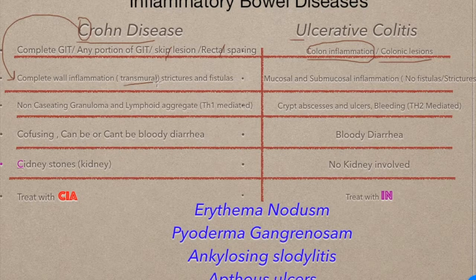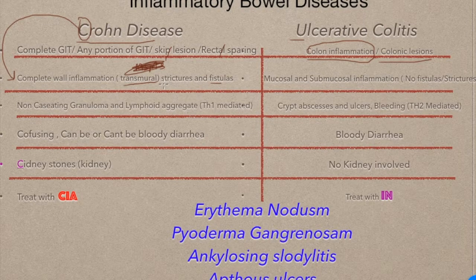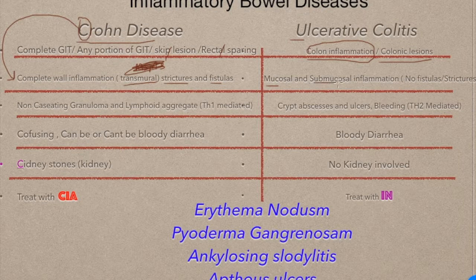Another 'C' for Crohn's: it's a complete wall inflammation, also called transmural inflammation. Going from inside to outside, it involves the mucosa, submucosa, muscularis externa, and serosa — the whole wall. This can cause fistulas or obstruction. Ulcerative colitis is only mucosal and submucosal inflammation and does not cause fistulas, strictures, or obstruction.